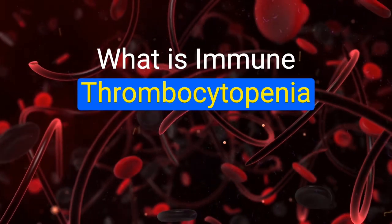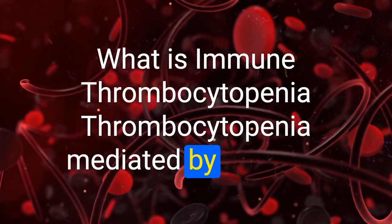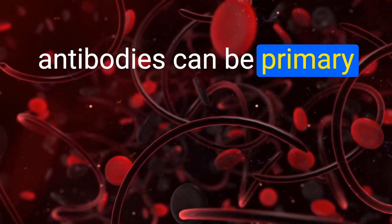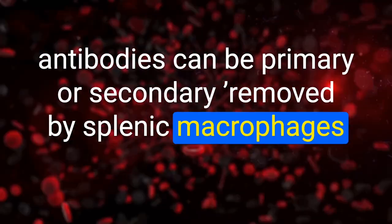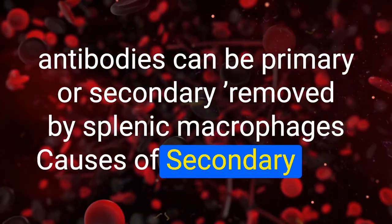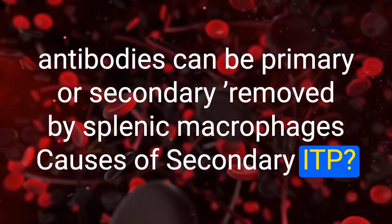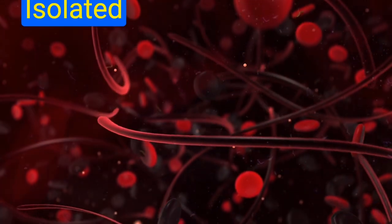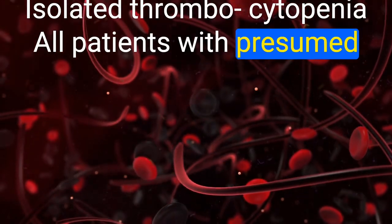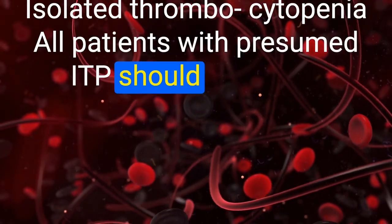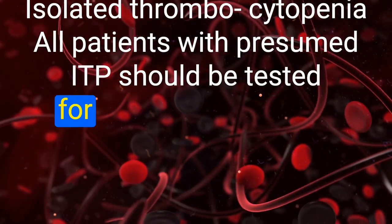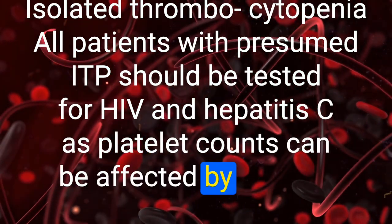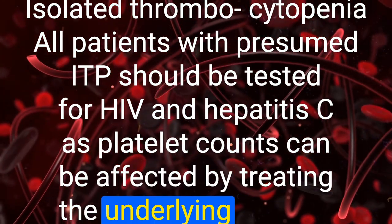What is immune thrombocytopenia? Thrombocytopenia mediated by GPIb/IIIa antibodies — can be primary or secondary; platelets are removed by splenic macrophages. Causes of secondary ITP include HIV, hepatitis C, and SLE. Isolated thrombocytopenia — all patients with presumed ITP should be tested for HIV and hepatitis C, as platelet counts can be affected by treating the underlying disease.